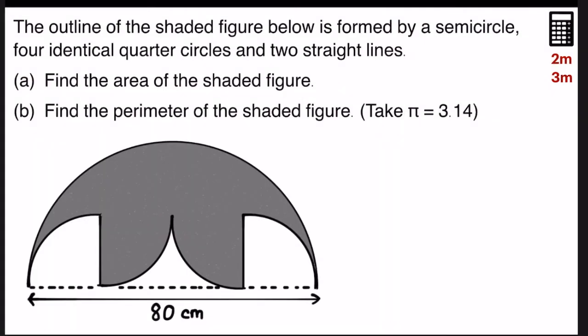Now, let's find the area of the shaded figure. First of all, you need to look at these four parts here. They actually form four radii of the small semicircle. So if I were to find one part, the length of one part, it will be 80 divided by 4, which is 20 centimeters.